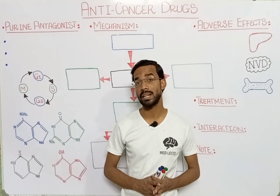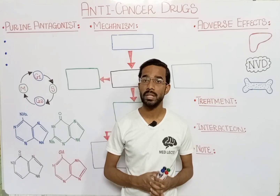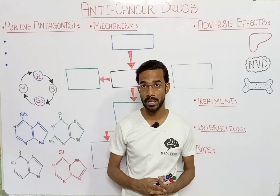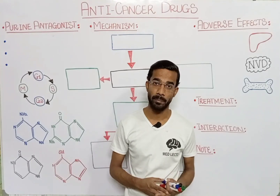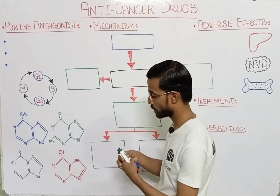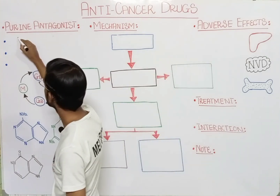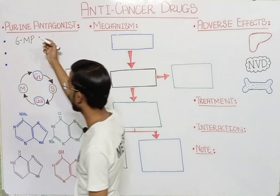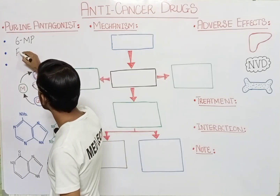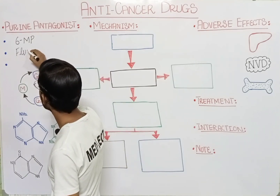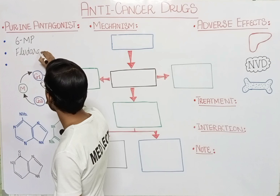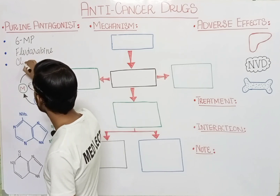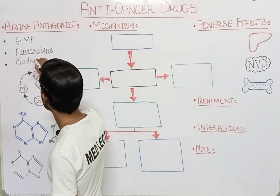There are three most important drugs that fall under the purine antagonists. The first one is 6-mercaptopurine, the second is fludarabine, and the last is cladribine. These are basically the purine antagonists.